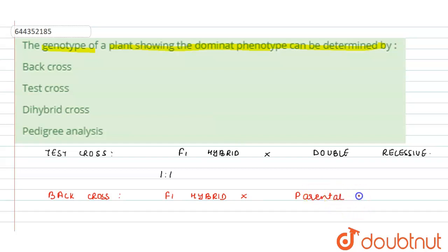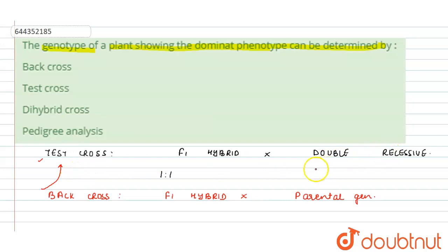So every test cross is a back cross, but every back cross is not a test cross. In a test cross we always require a double recessive parent, whereas in a back cross you can use either of the parental generation, and that parental generation can be either in a homozygous or a heterozygous condition.